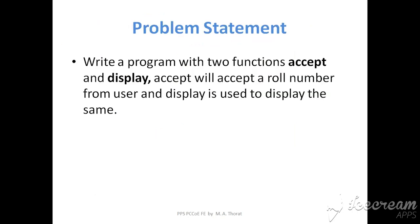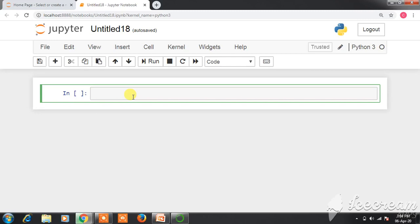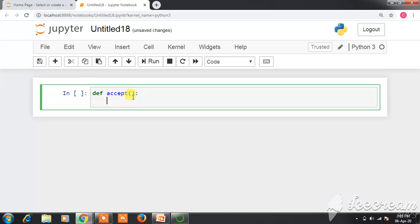Now we will see a problem statement that shows how this exactly works in code. The problem statement is: write a program with two functions which accept and display values. The accept function will accept a roll number from the user, and the display function is used to display that same roll number. We write the first function 'def accept' with no parameters, since we are accepting the value inside the accept function.